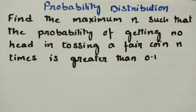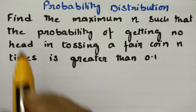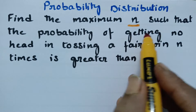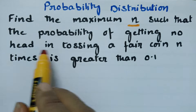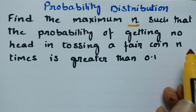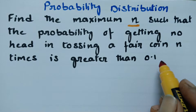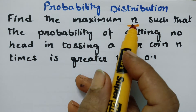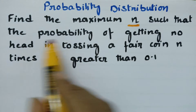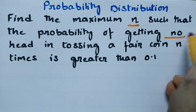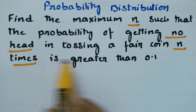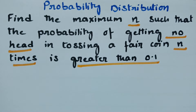This video is on binomial distribution, related to probability distribution. Find the maximum n such that the probability of getting no heads in tossing a fair coin n times is greater than 0.1.